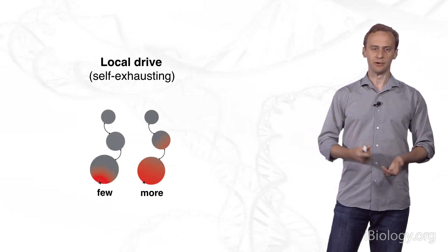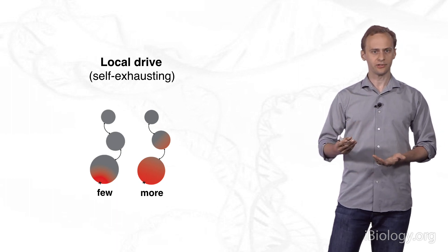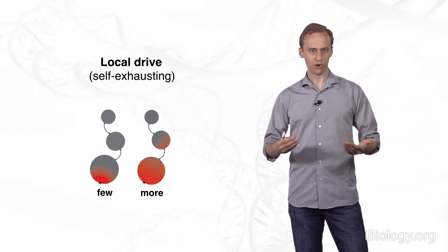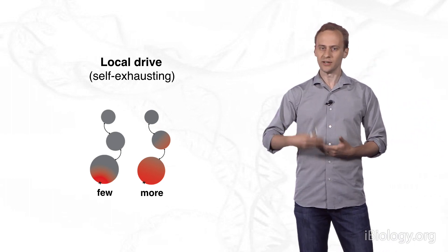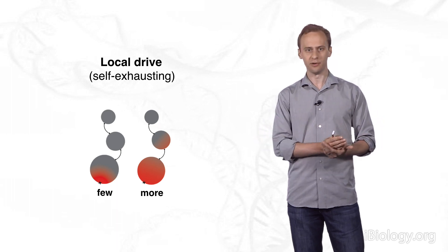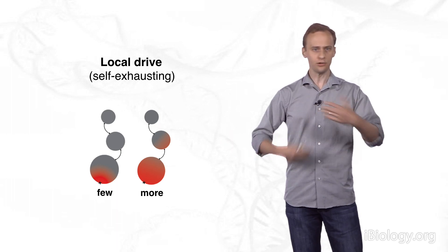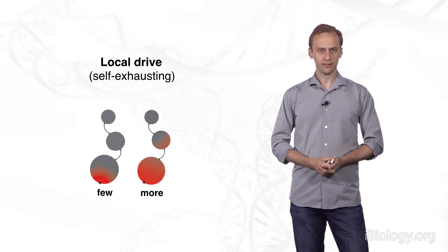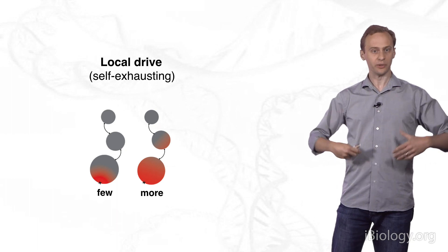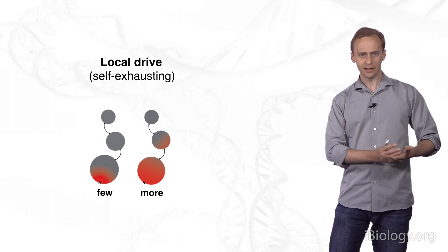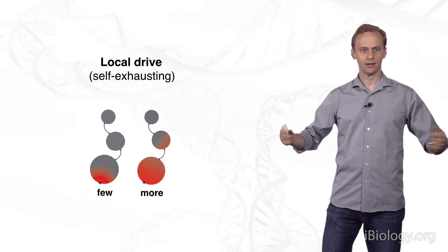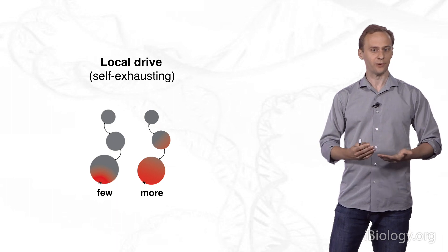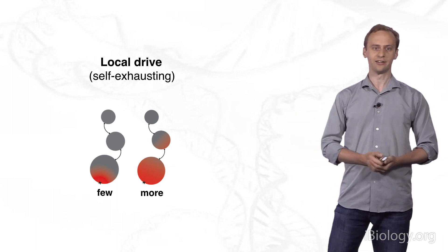Instead, most laboratories may want to pursue alternative drive systems that are not self-propagating. The opposite of a self-propagating drive system is one that is self-exhausting. It's one that relies on some form of genetic fuel that is used up over generations as the drive spreads, until eventually it runs out and stops. This means that you get a spreading pattern in which the release of a few organisms leads to some amplification before it eventually stops. When you release more organisms, it spreads further through the population. But it does not spread indefinitely through all connected populations.